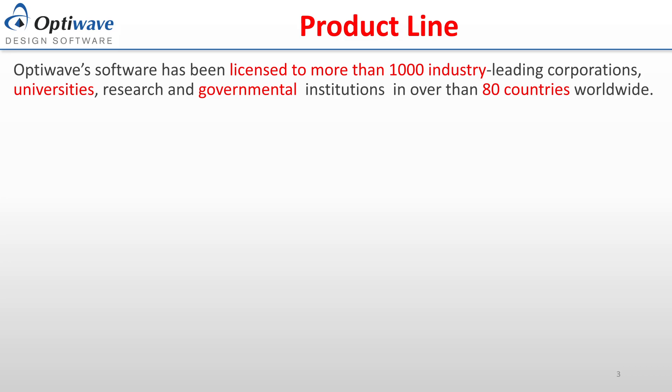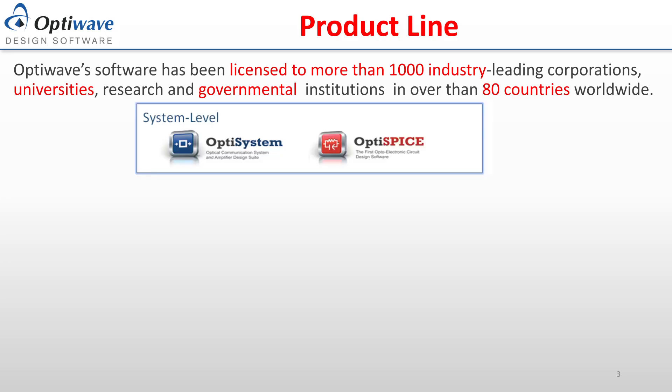OptiWave offers multiple different products with focus on different aspects of systems. OptiSystem and OptiSpice are the system-level design packages, where OptiSystem is used for optical systems and OptiSpice is used for optoelectronic circuits. Compatibility between the two packages allows circuits designed within OptiSpice to be used in OptiSystem files.